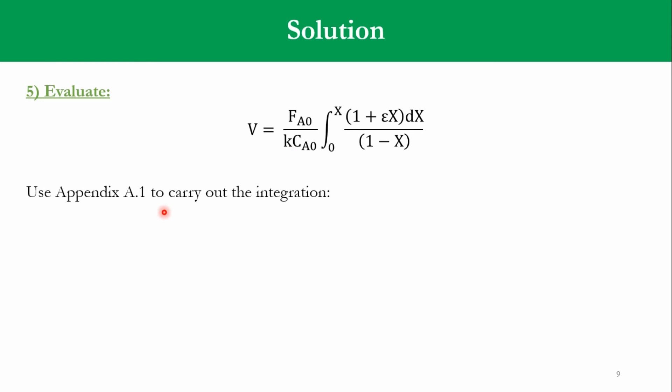And accordingly, CA0 is taken out of this equation because it is a constant quantity. Also, K is another constant quantity, but we are taking it out in the evaluation part. Now, using appendix A1 to carry out this integration and the solution of this integral is provided over there. That is 1 plus epsilon bracket natural log of 1 over 1 minus x minus epsilon x. That FA0 over KCA0 is taken here.